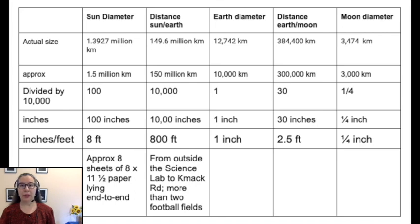So I got 100 kilometers for the diameter of the Sun, 10,000 kilometers for the distance from the Sun to the Earth, one kilometer for the Earth, 30 kilometers for the distance between the Earth and the Moon, and around one-fourth of a kilometer for the diameter of the Moon. I decided to change all the units to inches, and for numbers that were large, I changed the inches to feet.